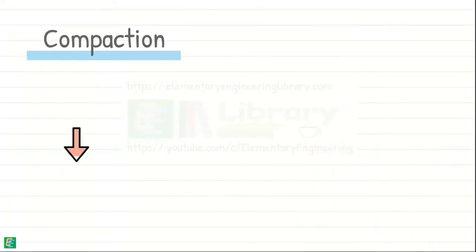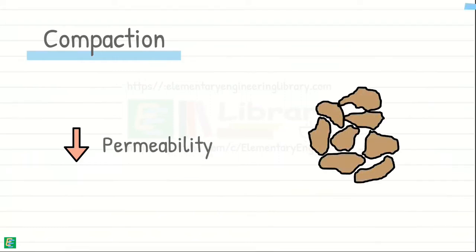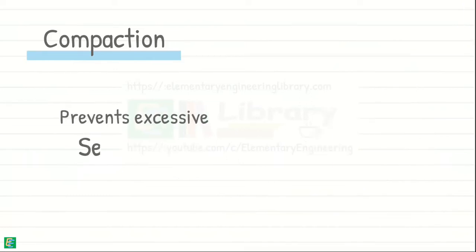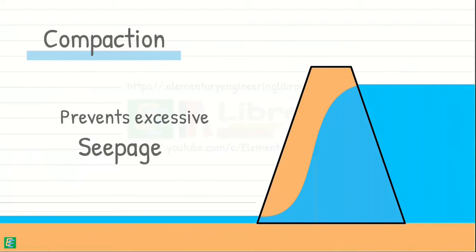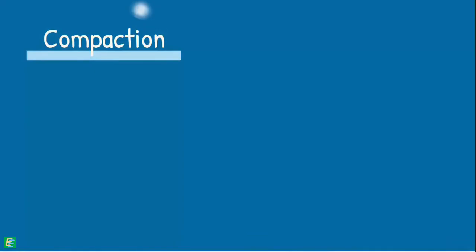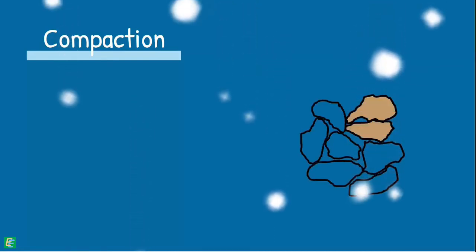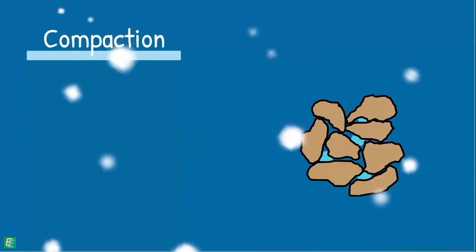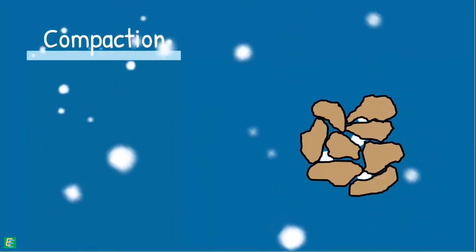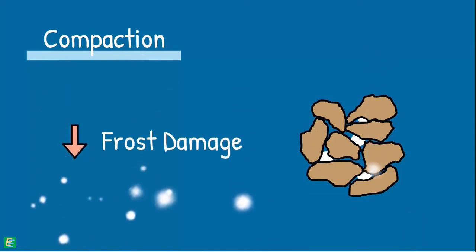Compaction decreases permeability of soil. It reduces the soil pores, making it less permeable to water. This prevents excessive seepage and improves the performance of water retaining structures. In addition to these, compaction also enhances frost resistance. As the compacted soil has fewer voids, limiting the amount of water that can penetrate and freeze within the soil, thus minimizing frost damage.